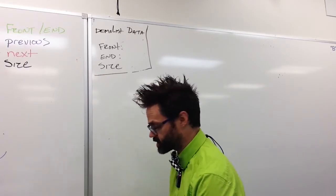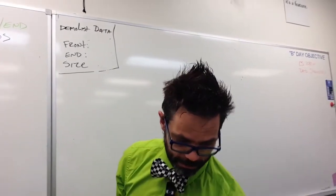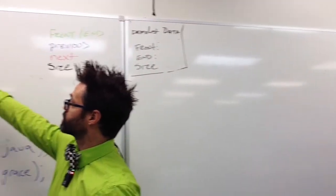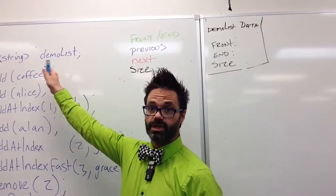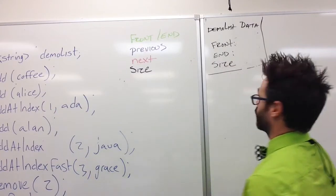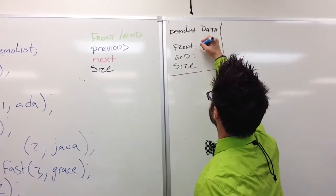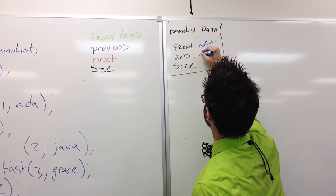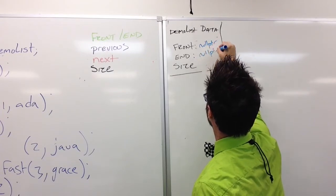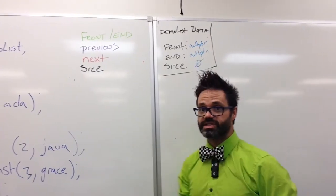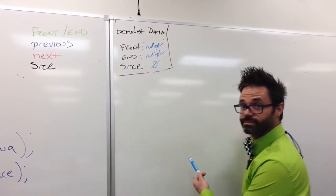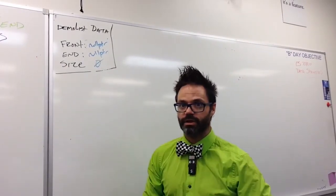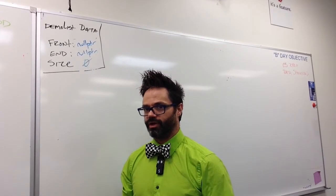So let's go ahead and take a look at this. In our first step, we have our double list of type string, demo list. So we initialize our demo list. At that point, our front is set to null pointer, our end is set to null pointer, and our size is set to zero. Here's our list — nothing.